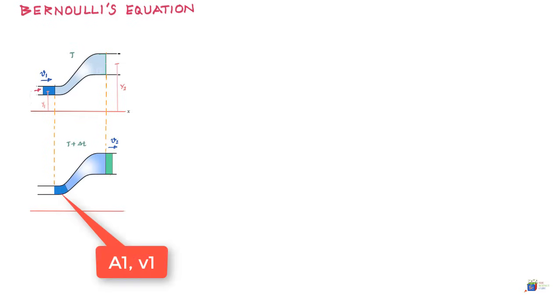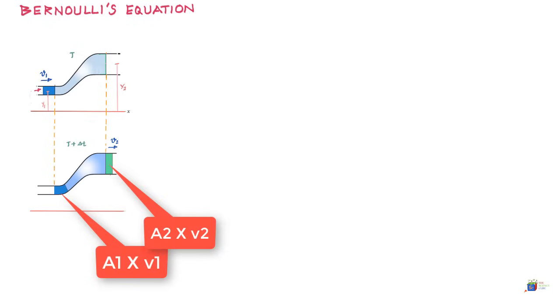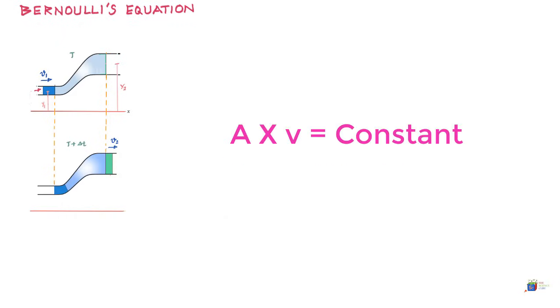The mass of the liquid pushed in and the liquid that came out has to be the same. This is in fact the continuity equation, which says that if a fluid is incompressible and it is flowing through a pipe, then the volume flow per unit time in one section should equal the volume flow per unit time in another section. So if the cross-sectional area is A1 with velocity V1, and A2 with velocity V2, then A1·V1 should equal A2·V2. The continuity equation says that the product of cross-sectional area and the velocity of the fluid should be a constant.